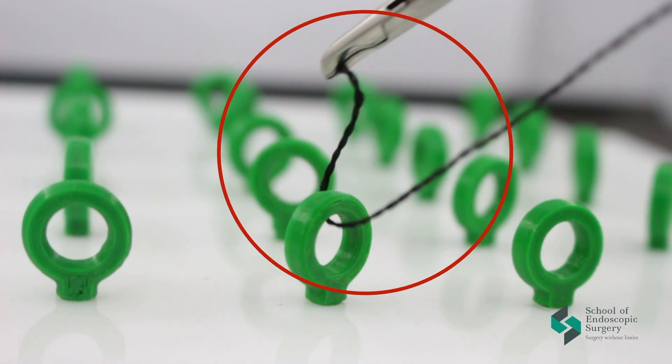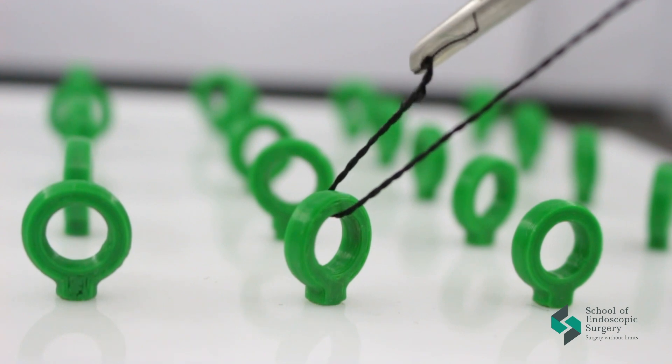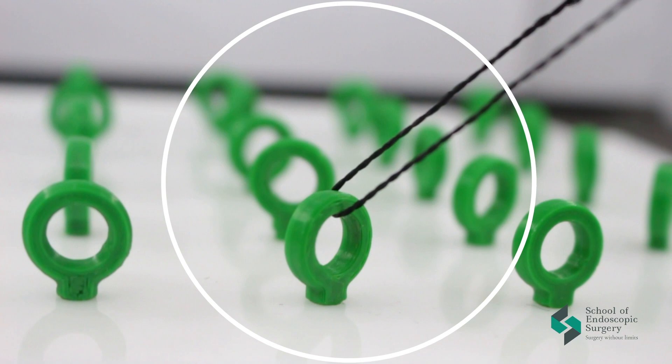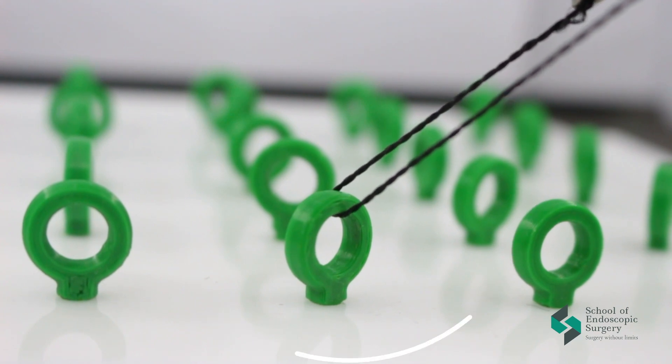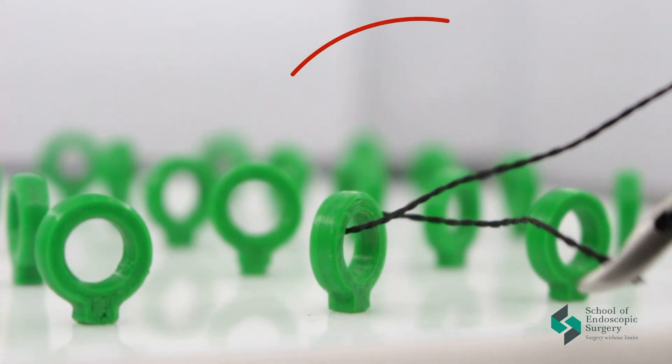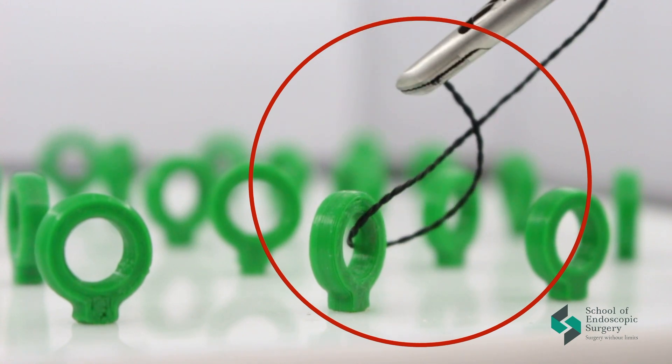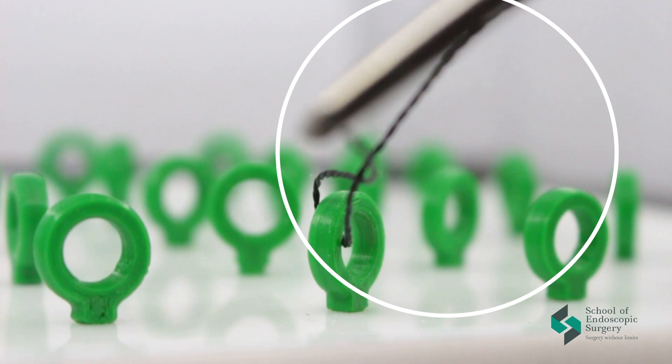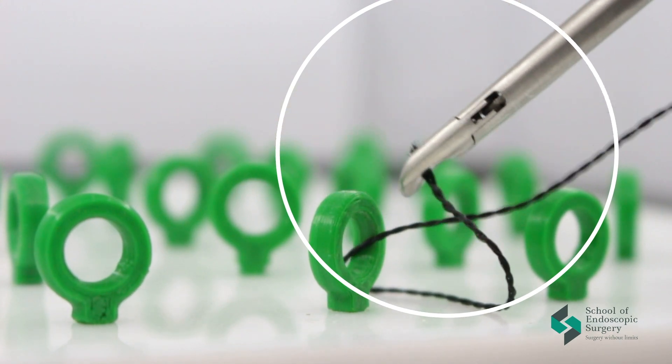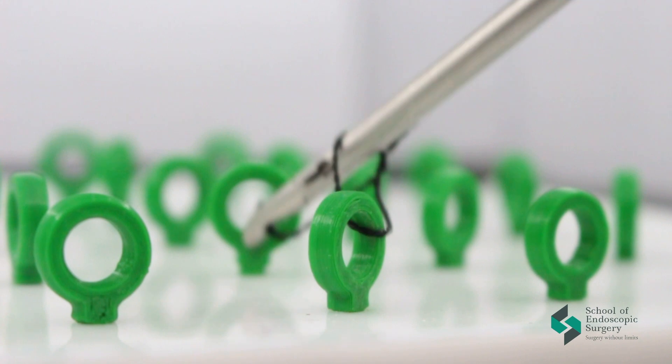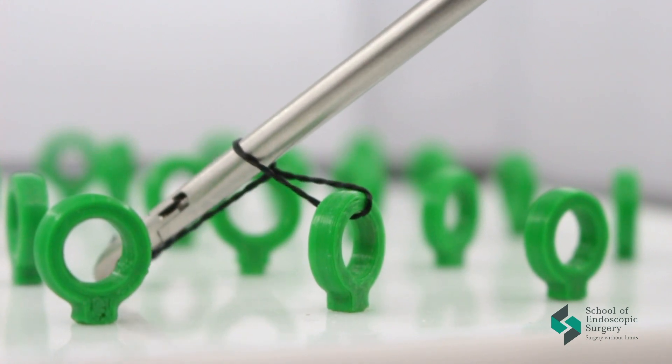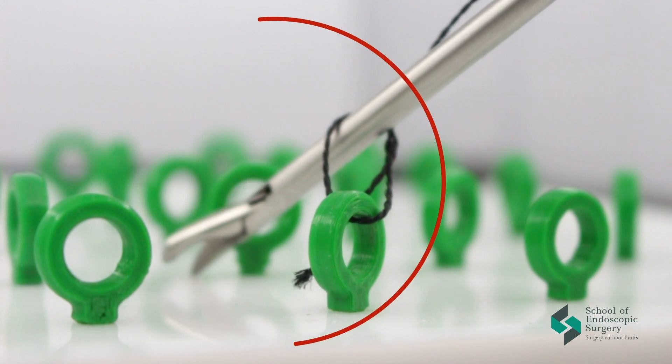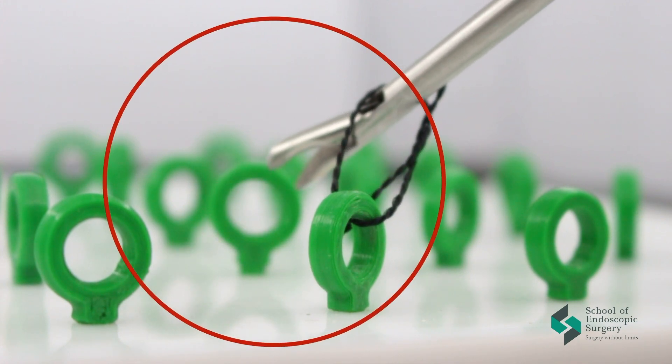The second mistake is the weakened end of the thread. After we have gripped the thread, we go around the long thread by forming the loop and pull out the needle holder. Don't forget to close the instrument when you pull it out.